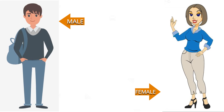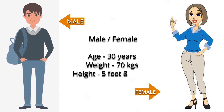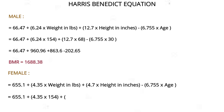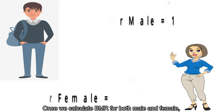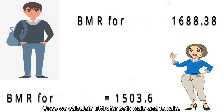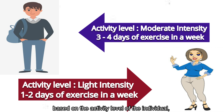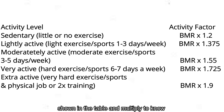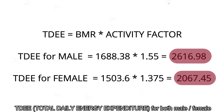Let's look into an example scenario for both male and female. Here I have taken similar values for both male and female to show you how the BMR varies in both cases. Place the values in the formula to know the BMR — converting the weight into pounds it's 154 lbs and the height into inches it's 68 inches. Once we calculate BMR for both male and female, based on the activity level of the individual, take the corresponding value from the activity factor shown in the table and multiply to know the TDEE — total daily energy expenditure — for both male and female.